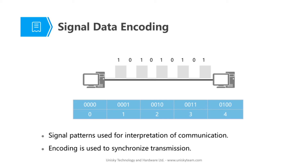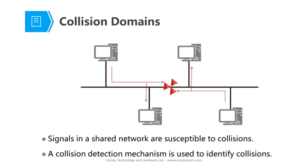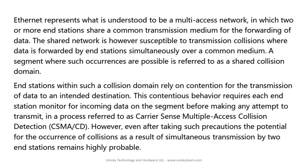As the medium transmits, it is usually put in patterns — this is what we call signal data encoding. Encoding is used to synchronize the transmission on the network, which we know is usually in binary. Transmissions are organized into what is known as a collision domain. A collision domain is a network segment connected by a shared medium or two repeaters, where simultaneous data transmissions collide with one another. There is a mechanism that allows us to detect collision domains — a typical example is the Carrier Sense Multiple Access with Collision Detection, which is CSMA/CD.